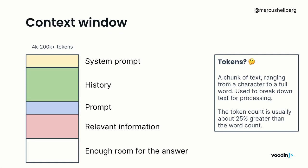We want to include our question and some relevant information to help the AI generate a helpful answer. It's also worth noting you need to leave enough room for the answer to be generated — if you cram a 4,000 token window full of data you have zero tokens left for an answer. Context windows have grown vastly in the past year, from 4–16K tokens to hundreds of thousands, even a million-plus with Gemini 1.5.